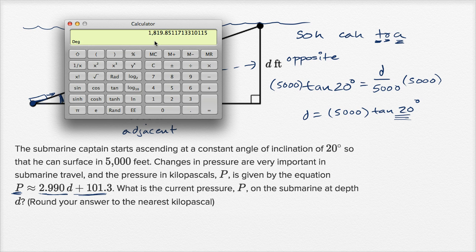So let's see, if I want to take our d, this is our d, multiply it by 2.990. So let's multiply it by 2.99, I can throw a zero there, I was not going to change the value, is equal to that. And then add 101.3.